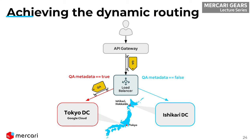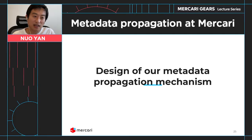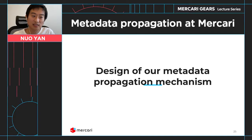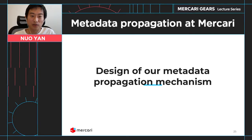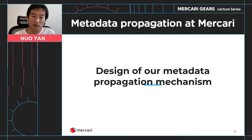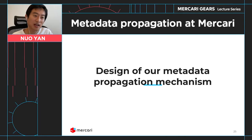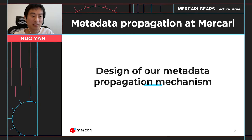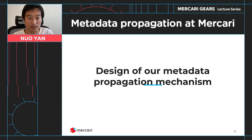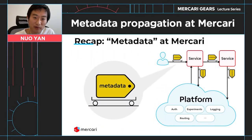This section showed how we used the metadata propagation mechanism to test the data center migration project from Ishikari to Google in Tokyo. In the last section, I talked about a case study of how we use metadata propagation to test our data center migration project. In this section, I'm going to talk about the design and internals of the mechanism.